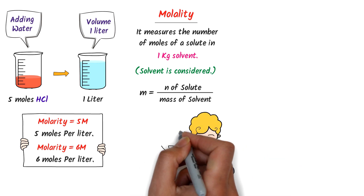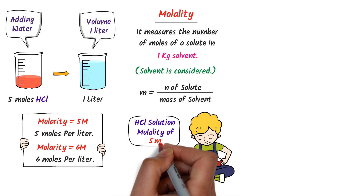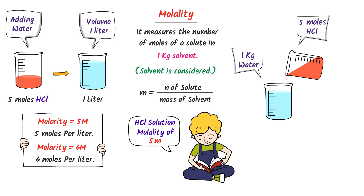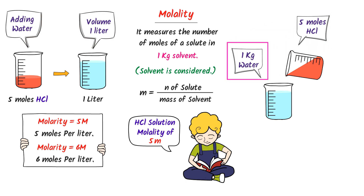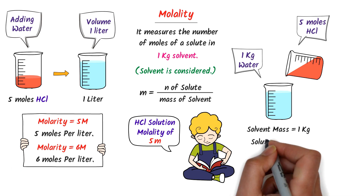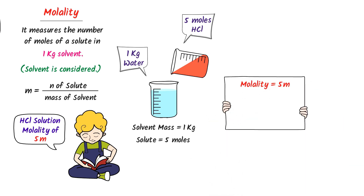For example, I want to prepare a solution of HCl having 5 m molality. Firstly, I take 1 kg water in the beaker. Secondly, I add 5 moles HCl to 1 kg water. Note that the solvent is 1 kg and I have dissolved 5 moles of solute. Thus, the molality of HCl is 5 m.